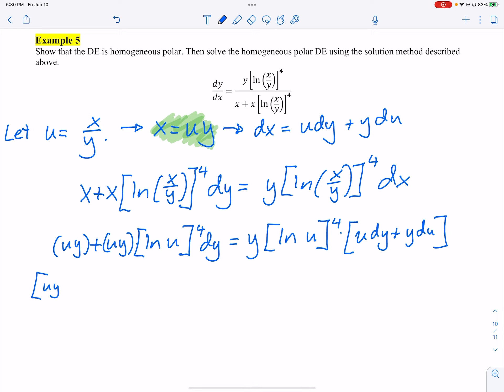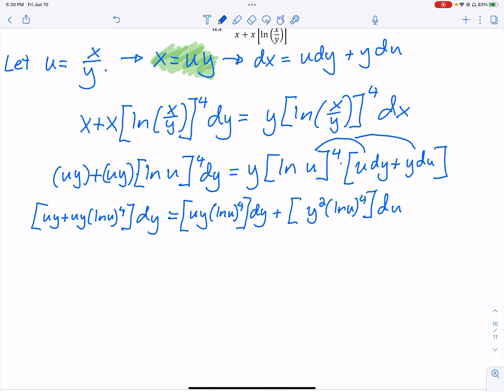Let's be careful. And the way the original problem is written, we don't have these parentheses here. So we can't do that. But I can start putting things together. I'm going to distribute the right side. We get u y plus u y times ln of u to the fourth dy equals, and then we're going to distribute this stuff. We get u y ln u to the fourth times dy, and then we get plus y squared ln u to the fourth du.